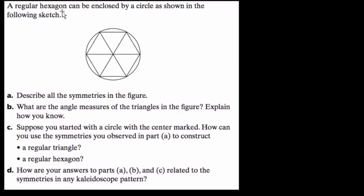In this problem we have a regular hexagon, which means a hexagon where every side is equal. A regular hexagon is a special case where every side is equal, and hexagon means there are six sides. We have a regular hexagon that's enclosed by a circle, as shown in the following sketch. So we have our circle, and on the inside we have our hexagon.